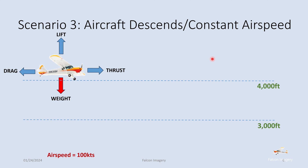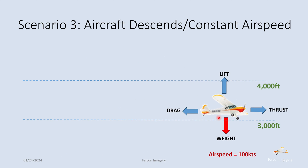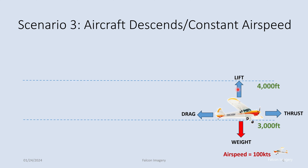Scenario three: an aircraft descending at constant airspeed. We're going to descend from 4,000 to 3,000 feet with airspeed staying constant. This is going to decelerate the aircraft. As we decelerate, we've got an increased vector of weight while the lift vector stayed the same. Since the weight increased for a period of time, we descended. The drag and thrust vectors stayed equal, so the net sum of the two was zero.